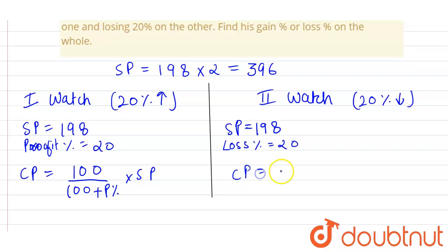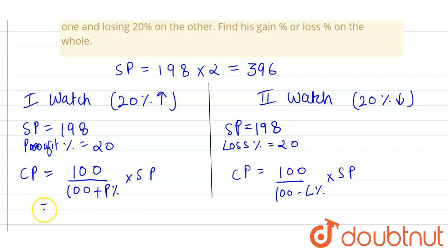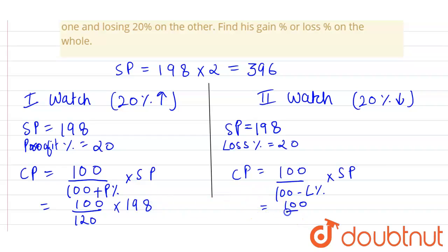For the second watch with a loss, CP = (100 / (100 − loss%)) × selling price. Substituting values: CP1 = 100/120 × 198, and CP2 = 100/80 × 198, since the loss percentage is 20%.